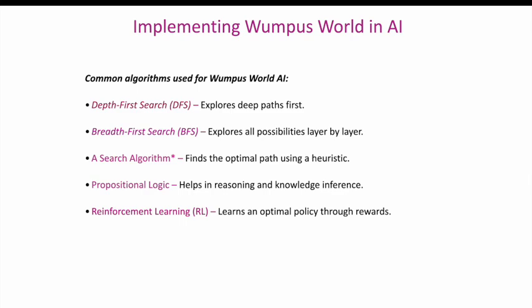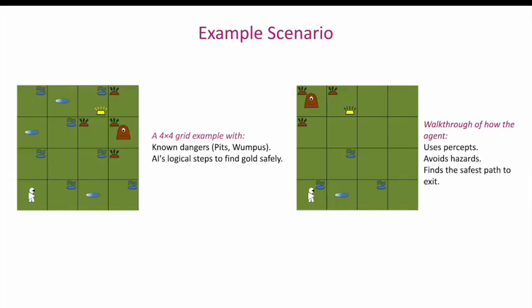Implementing Wumpus World AI — common algorithms used: Depth-First Search (DFS) explores deep paths first; Breadth-First Search (BFS) explores all possibilities layer by layer; A* search algorithm finds the optimal path using a heuristic; propositional logic helps in reasoning and knowledge inference; and reinforcement learning learns an optimal policy through rewards. An example scenario uses a 4x4 grid with known dangers — pits and Wumpus — and walks through the AI's logical steps to find gold safely using percepts, avoiding hazards, and finding the safest path to exit.